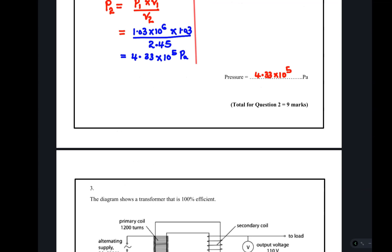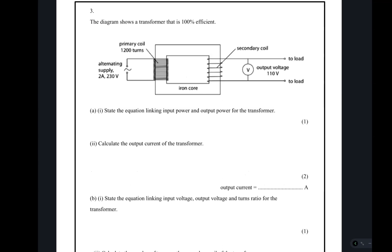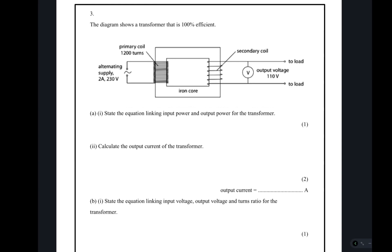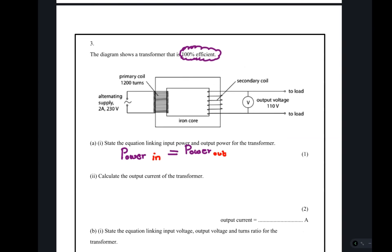Moving to electromagnetic induction — the most interesting concept in physics. We are told the diagram shows a transformer with efficiency of 100%. When efficiency is 100%, power input equals power output. State the equation linking input and output power of a transformer: power in equals power out. Power is given by voltage times current, P = VI.